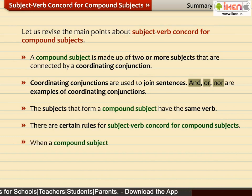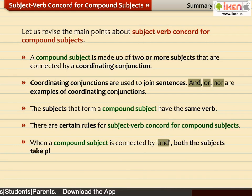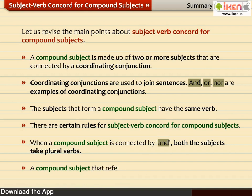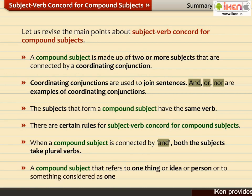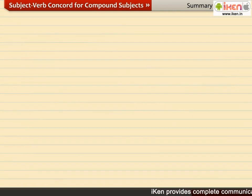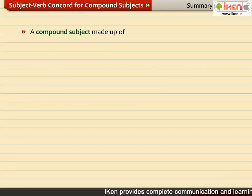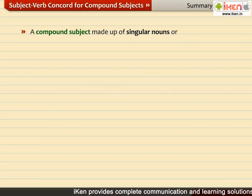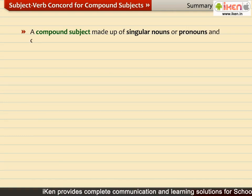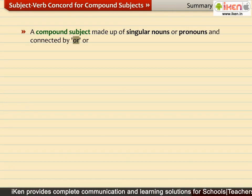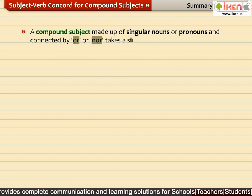There are certain rules for Subject-Verb Concord for compound subjects. When a compound subject is connected by AND, both the subjects take plural verbs. A compound subject that refers to one thing, or idea, or person, or to something considered as one unit, takes a singular verb. A compound subject made up of singular nouns or pronouns and connected by OR or NOR takes a singular verb.